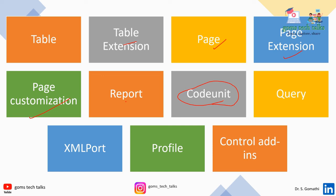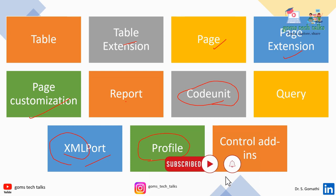Additional objects include: Query — for extracting data from one or more tables, calculating and creating output or new data structures (similar to SQL queries); XMLport — for importing and exporting data to or from external files, supporting XML or other file formats; Profile — for defining role centers and grouping page customizations; and Control Add-ins — allowing display of HTML5 visualizations based on Business Central data, and able to send back events that trigger additional code.